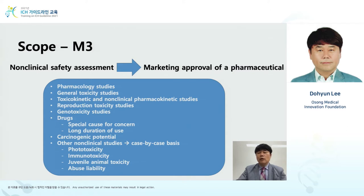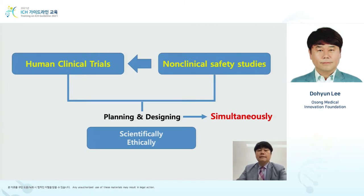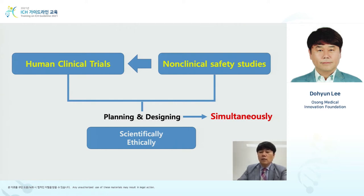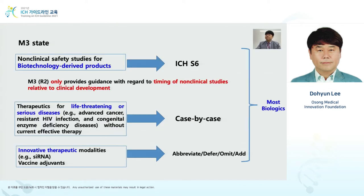For a non-clinical study, it includes pharmacology studies and general toxicity studies, among others. In the initial stage of non-clinical safety studies, the planning and designing must be done simultaneously with clinical trials. It seems easy, but there are many cases where planning and designs are done separately. We have to make sure non-clinical safety studies are planned and designed in consideration of human clinical trials, to ensure there is no waste of animals and resources, and to achieve scientific and ethical results.